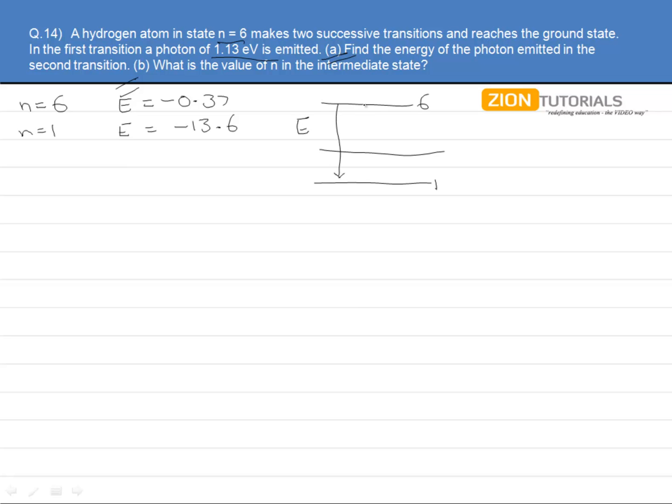So if this is the total energy capital E and this transition energy to be E dash and this one to be E double dash, then we can say that the photon of energy E double dash is actually equal to the total energy of the direct photon, that is E minus E dash.